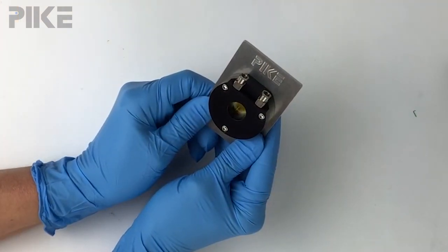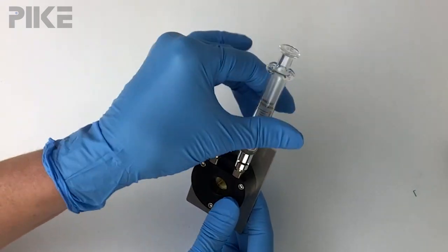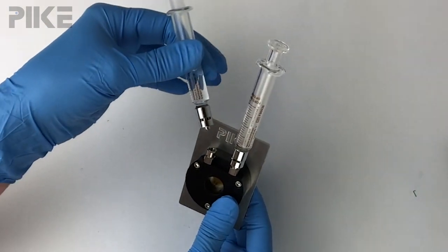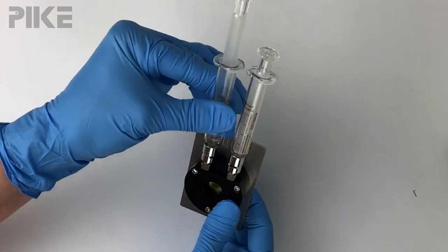This is our smart seal cell. To clean it, I will connect two syringes, one being empty and the other filled with a solvent that's compatible with my sample for cleaning.